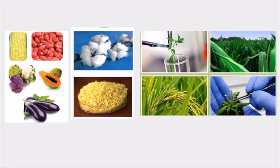An example of a genetically modified crop is Bt cotton, or Bacillus thuringiensis cotton. The gene of the Bacillus thuringiensis organism is inserted into the cotton plant. This plant can then withstand problems like the bollworm, which feeds on cotton leaves. Because of the toxins produced by the Bt gene, the bollworm automatically dies, protecting the plant.